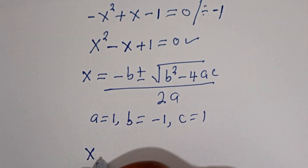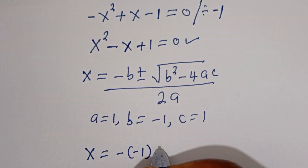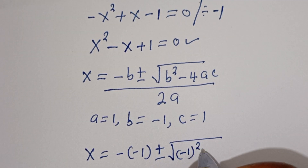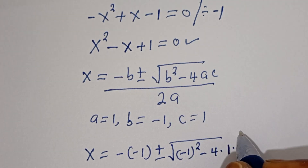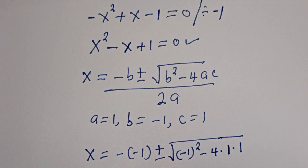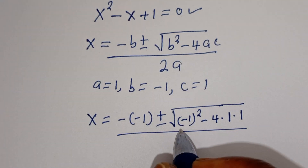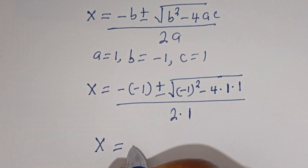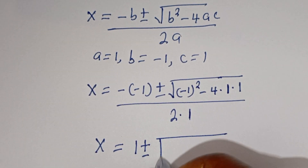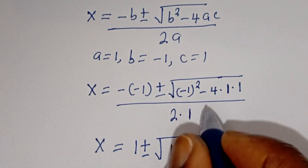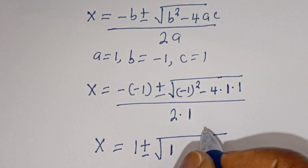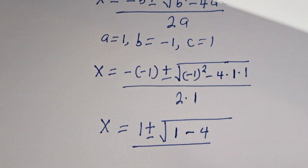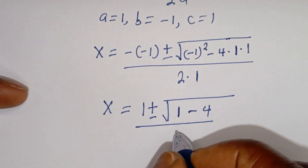We have x is equal to minus bracket minus 1, plus or minus square root of minus 1 squared minus 4 times 1 times 1, that is minus 4, divided by 2 times 1, that is 2.